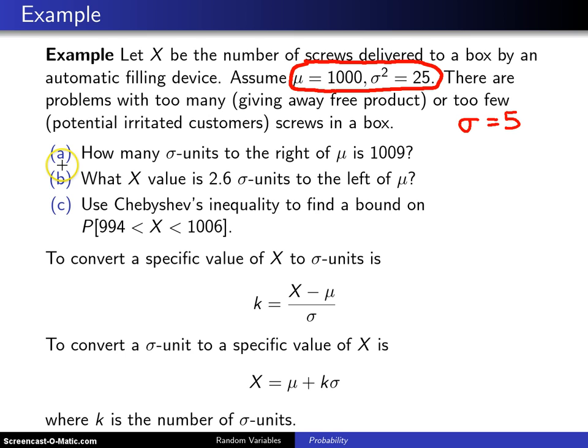So there are three parts to this problem. The first is how many sigma units to the right of mu is 1009. Second problem is what X value is 2.6 sigma units to the left of mu. And finally use Chebyshev's inequality to find a bound on the probability that X, the number of screws in the box, lies between 994 and 1006.